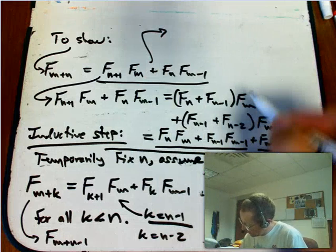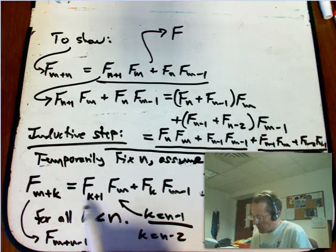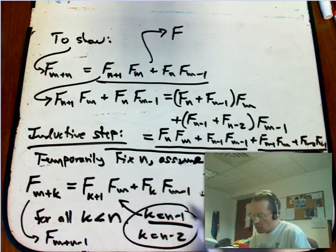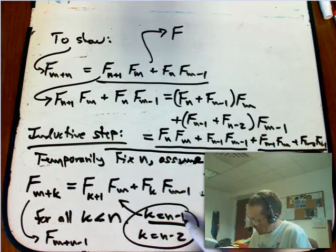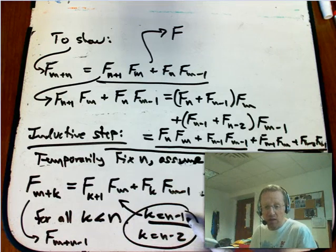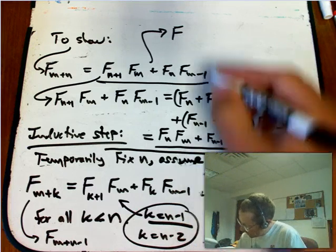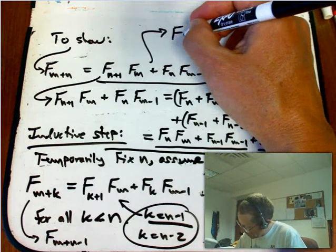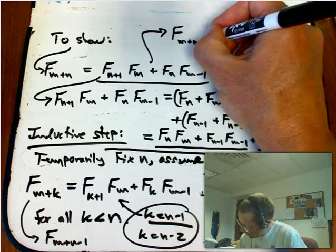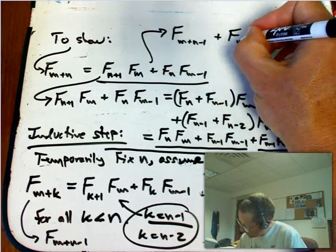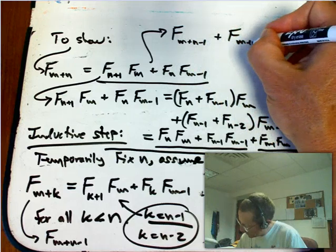So this, if I set k equals n minus 1, what does this become? It becomes f sub m plus n minus 1. And then this, if I set k equals n minus 2, that's f sub m plus n minus 2. So in other words this thing was equal to this, equal to this, and that's equal to by the inductive assumption. And here I'm using now exactly as advertised two cases: the case just before the case that I don't know yet and the one just before that. And I'm getting that's f sub m plus n minus 1 plus f sub m plus n minus 2.